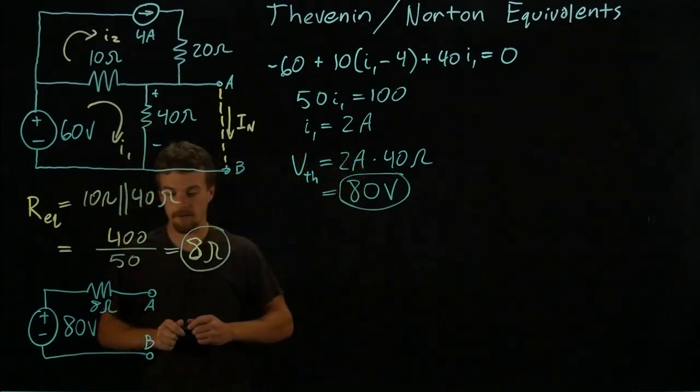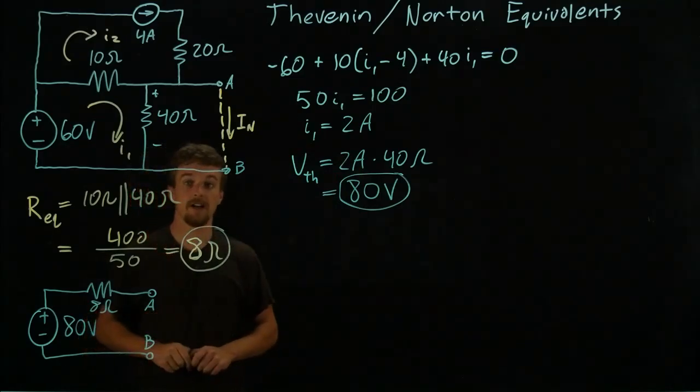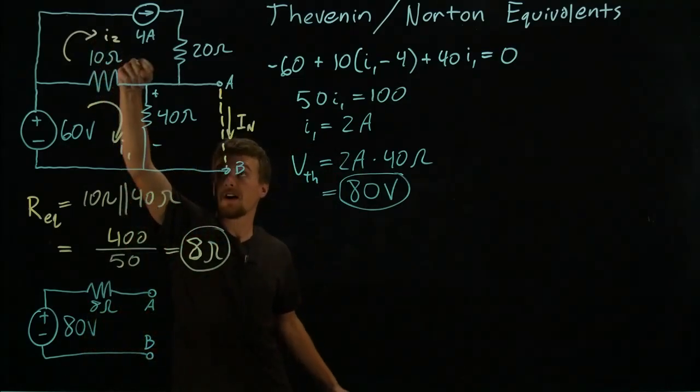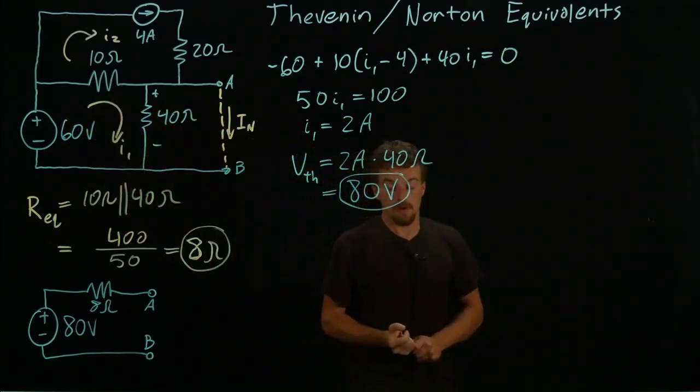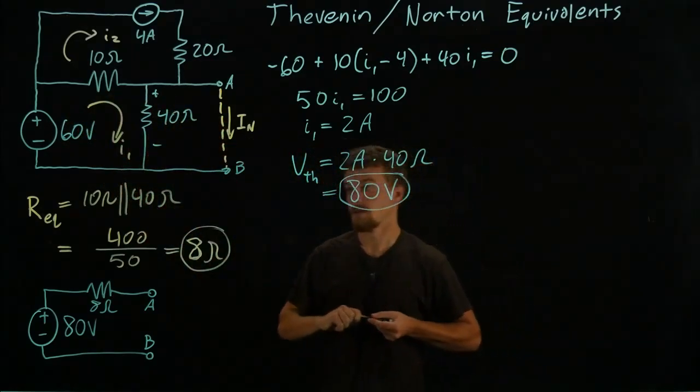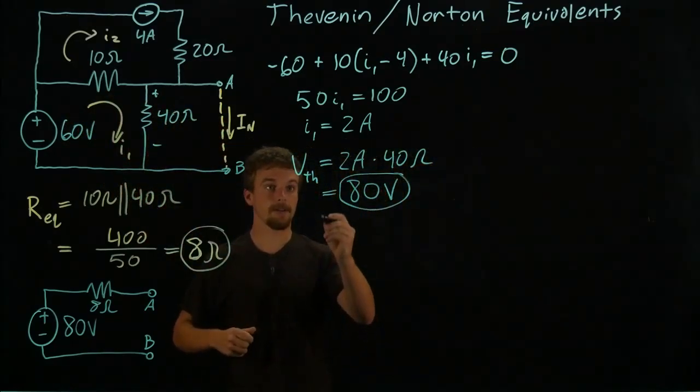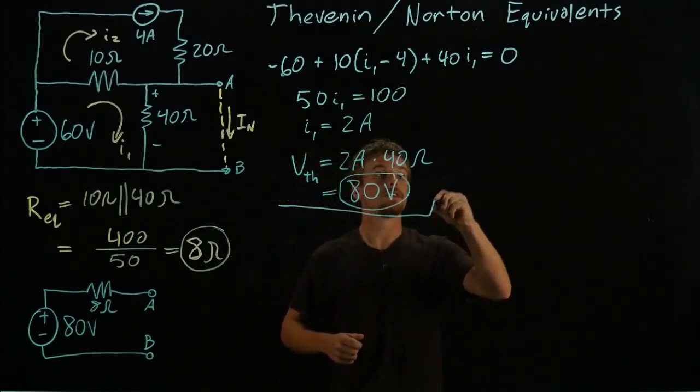So we are going to do mesh analysis again, calling this top part of loop and this entire bottom part of loop. It's basically a new circuit if you want to think about it like that.